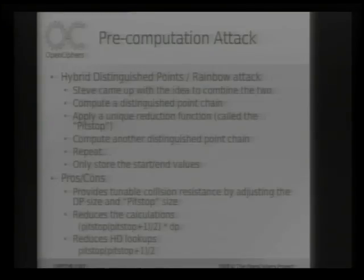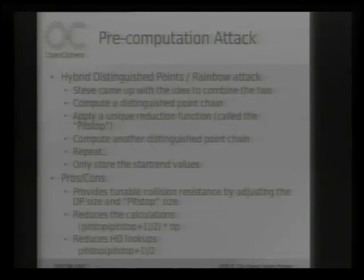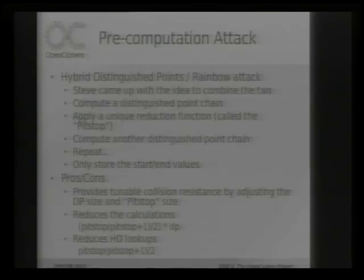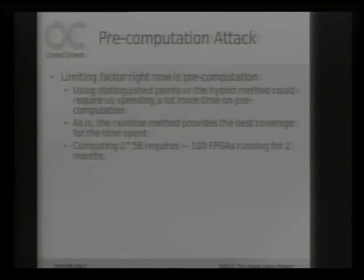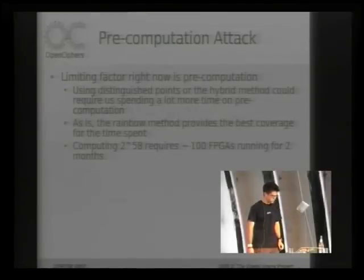We ended up messing around with it, and it seems like we'll be better off with just using the rainbow table. When we're spending months to calculate these rainbow tables, if we end up having collisions, it just multiplies the amount of time we have to run the attack to get the distribution we need. So right now, the limiting factor is pre-computation.